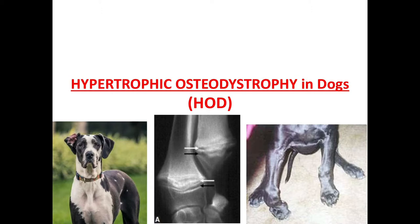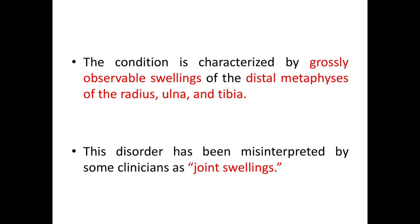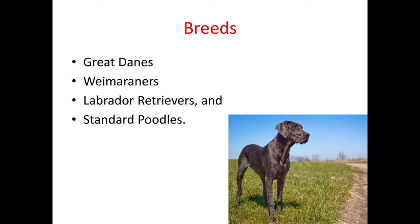Hypertrophic osteodystrophy (HOD), or metaphyseal osteopathy, is a disease of long bones in rapidly growing large or giant breeds of dogs. It causes metaphyseal trabecular disruption and is characterized by grossly observable swellings of the distal metaphysis of the radius, ulna, and tibia. This disorder has been misinterpreted by some clinicians as joint swellings, but the condition can also be seen in the jaw, ribs, or vertebrae.